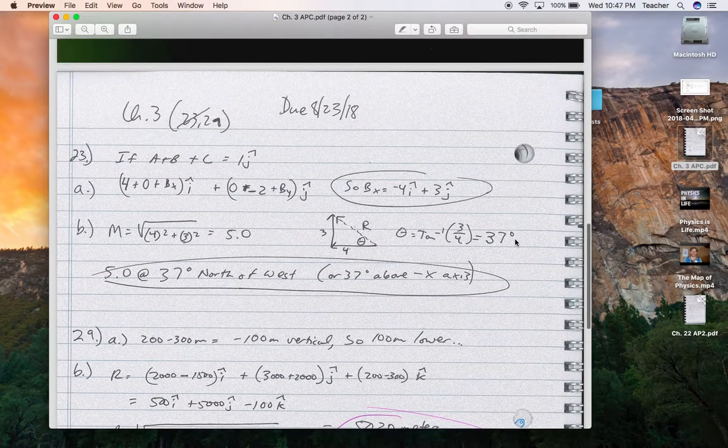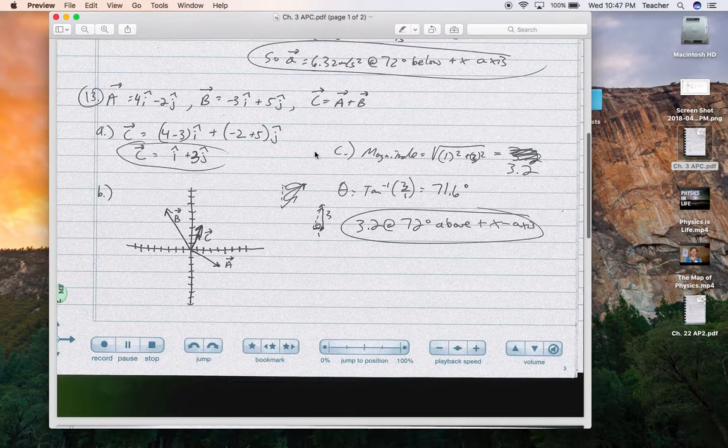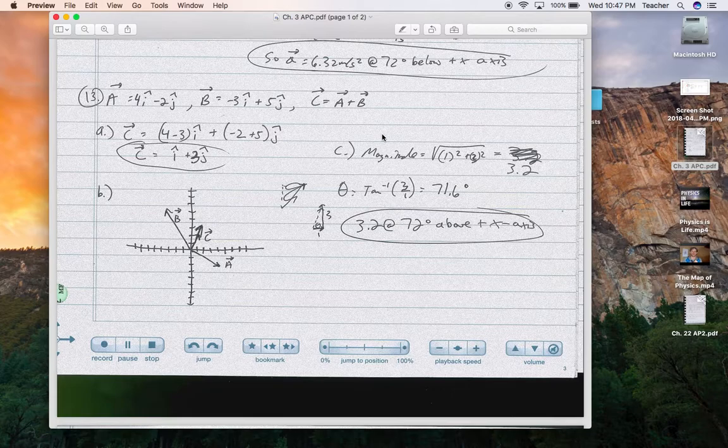So key thing with these is just keeping the terms straight and grouping them. 13 was probably the best one to show that. Again, I don't think this is going to show much up on the AP exam, but if you see a multiple choice problem with that, you need to remember what i hat, j hat, and k hat mean. And that is it.